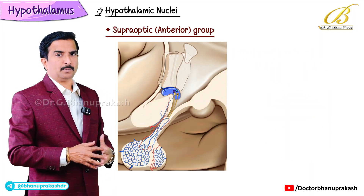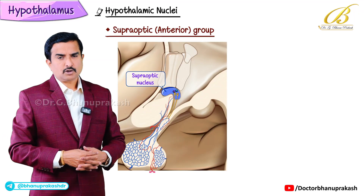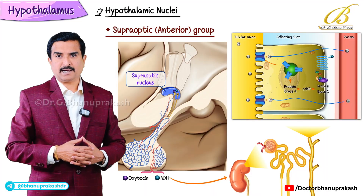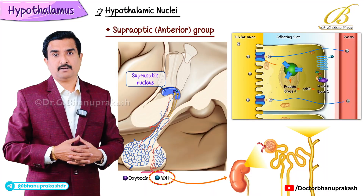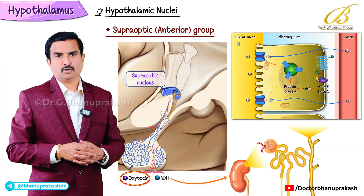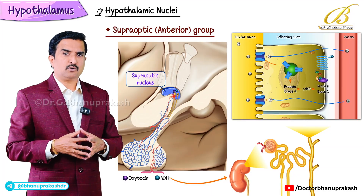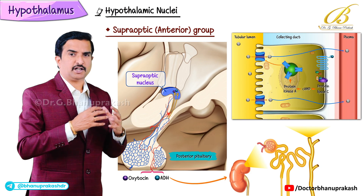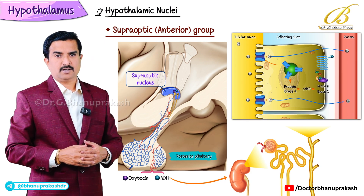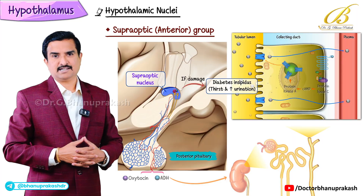The next nucleus in this group is the supra-optic nucleus. It helps regulate water balance by producing anti-diuretic hormone and oxytocin. These hormones are transported to the posterior pituitary and released into the circulation. Injury here can lead to diabetes insipidus.